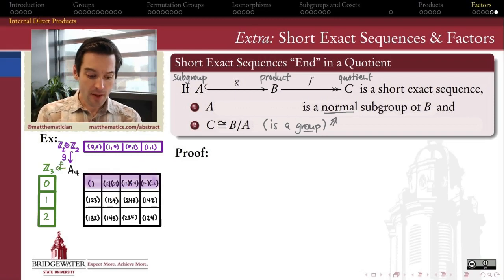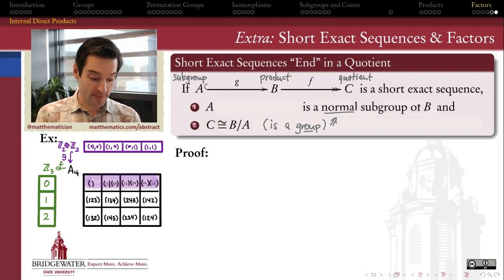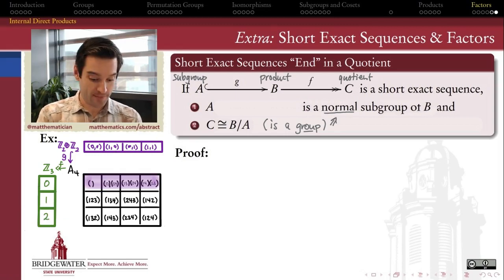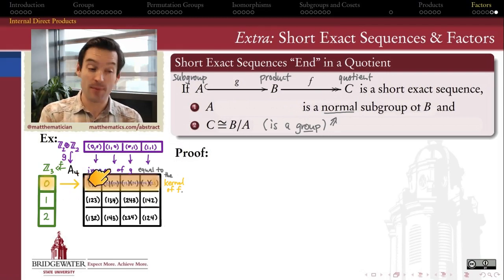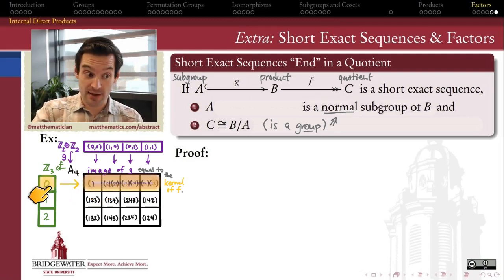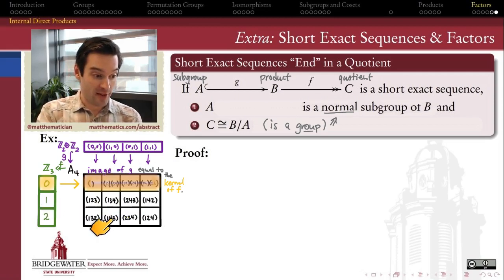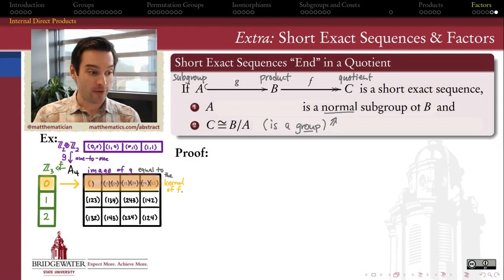The quotient of A4 by this normal subgroup is then a group of order 3, which therefore must be isomorphic to Z mod 3. So the factor group playing the role of C in this example is the group Z mod 3. That quotient map needs to be an onto homomorphism whose kernel is exactly the same as the image of G — meaning all of the 2-plus-2 cycles and the identity get sent to the identity in Z mod 3. Then we take everything on this row and send it to one, and everything in this coset and send it to two. That forms my short exact sequence for this example.